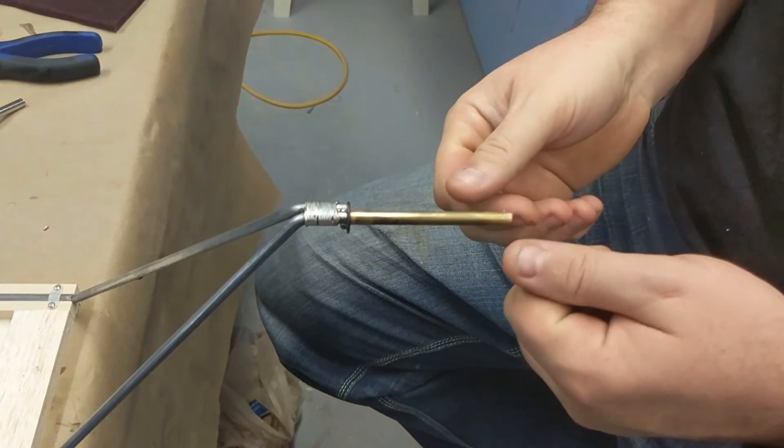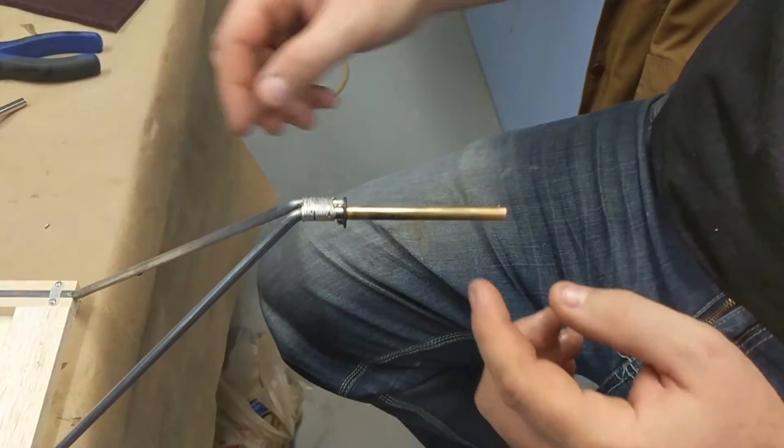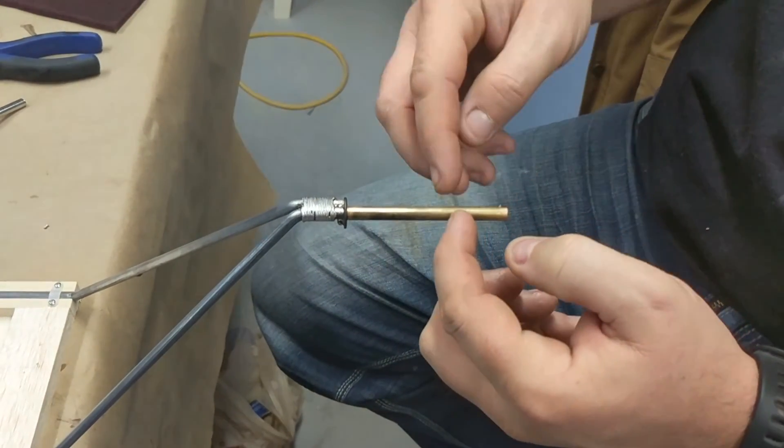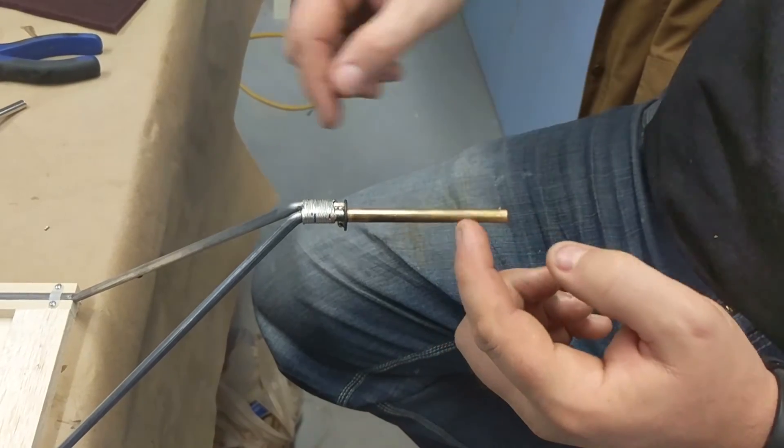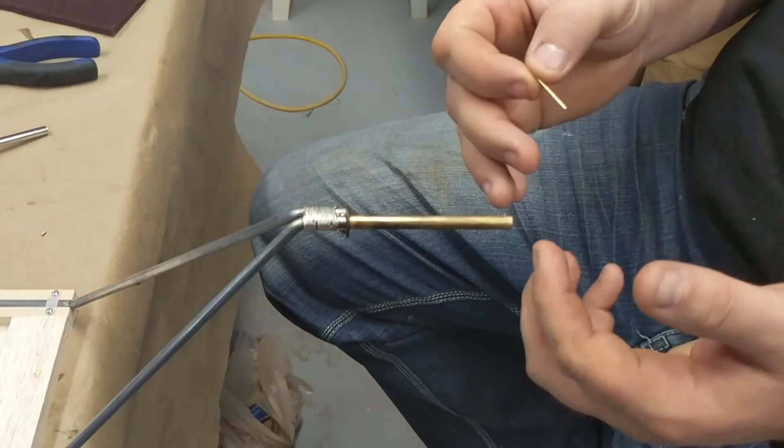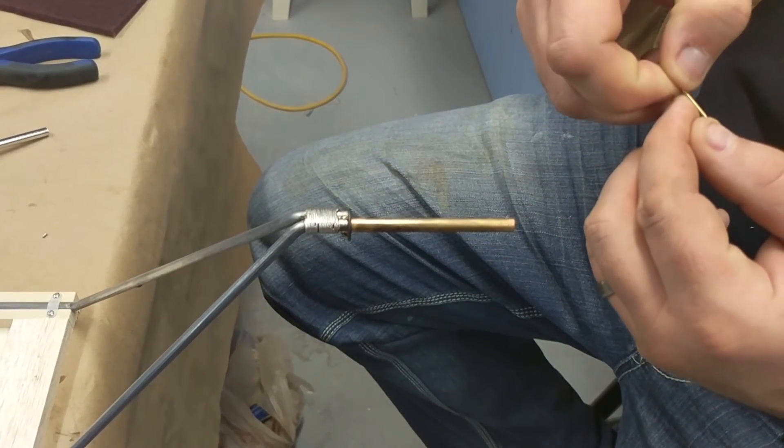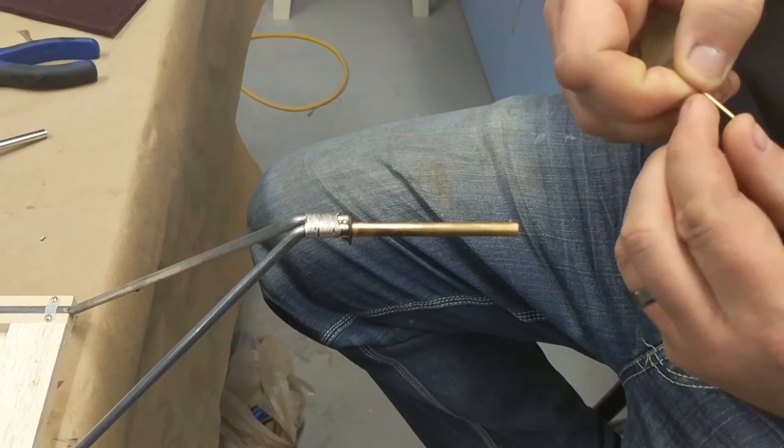So then all you do is, after it's all nice and cool, you'll slide your wheel on, slide your second washer on, and then find out where you have to drill for your cotter key. You'll drill that hole, slide the assembly together, put the cotter key through, and just bend the ends over.